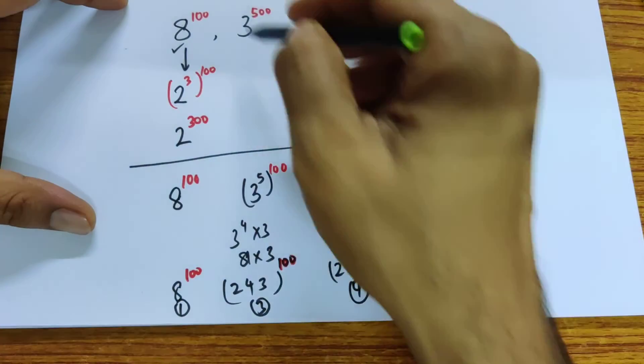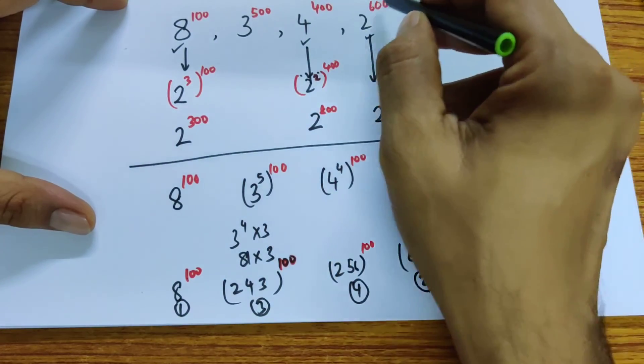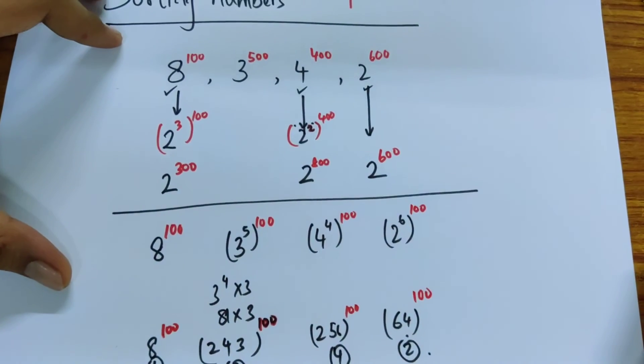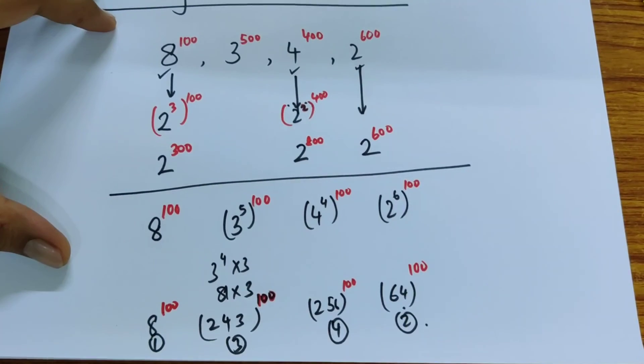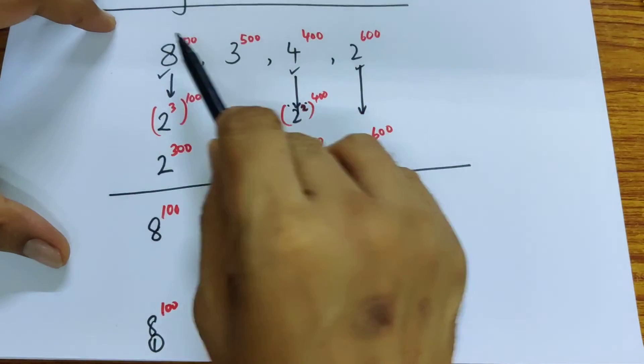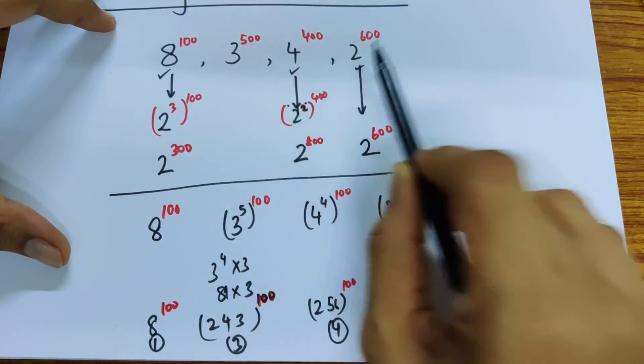If you cannot approach it in one way, you start looking at the powers. That's the trick. In each question, you need to be looking at: can I find something common here?